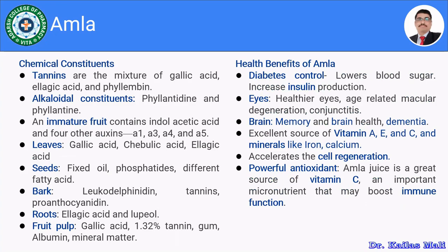As mentioned, Amla comprises tannins, which are mixtures of gallic acid, ellagic acid, and phyllembine. These three tannins are present in Amla. There are also certain alkaloidal constituents present in Amla, which are phyllanthidine and phyllantine. These are the alkaloidal principles present in Amla.